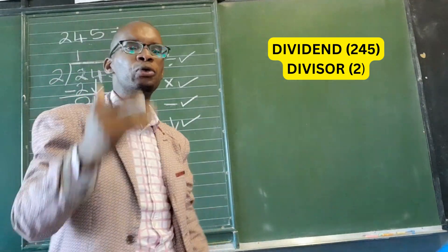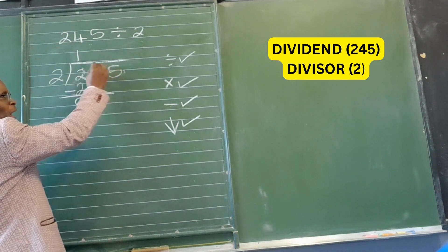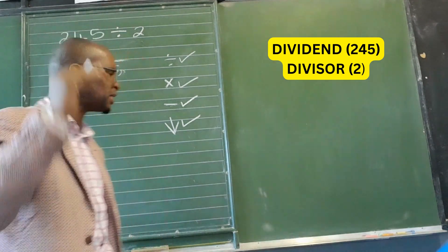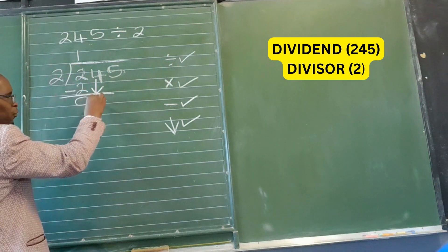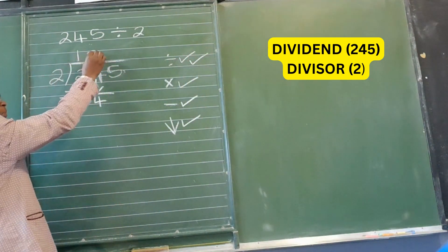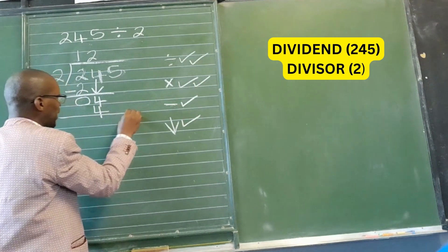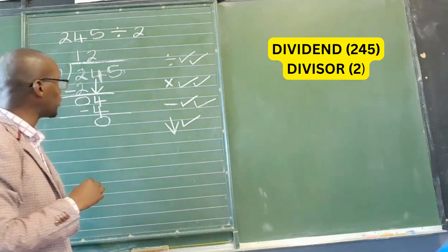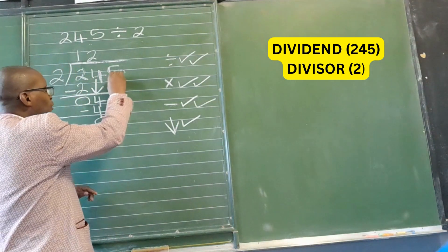Every time after bringing down, you repeat your rules starting again with division. We are now looking at the new number formed after we brought down, which is 4. Two goes into 4 how many times? Two times. Multiply: 2 multiplied by 2 gives you 4. Subtract: draw your line, 4 minus 4 gives me zero. Then bring down — I've used the 2 and the 4, so the next number to bring down is 5.